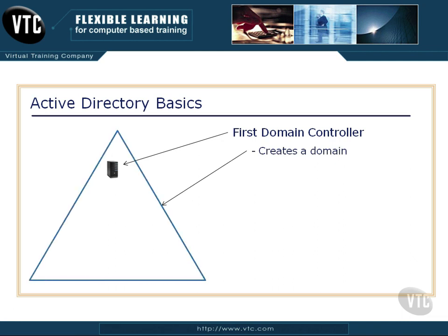Promoting a server to a domain controller creates a domain. These are usually represented by triangles, and that domain — think of it as a security fence — everybody inside that fence is going to have to play by the security rules set up in Active Directory. This becomes the root domain. We can create other domains as child domains or parent domains and connect them, but this is going to be the parent of all future domains.